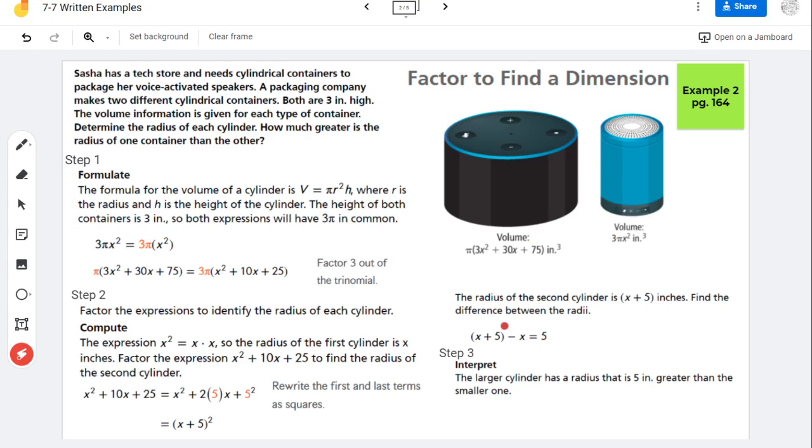So now, the next part of this is we're trying to compare the radius from one container to the other. So if I take the radius of the big one and subtract the radius of the little one, that's going to tell me the difference in the two. So in this case, it's a difference of 5 inches.